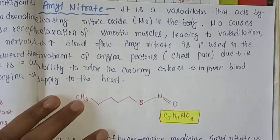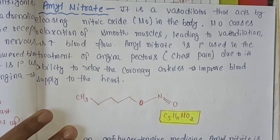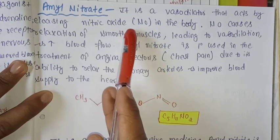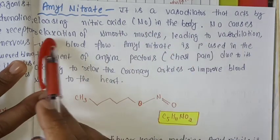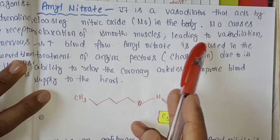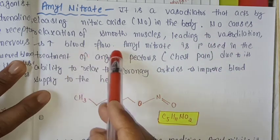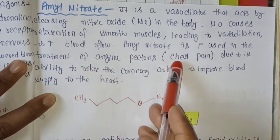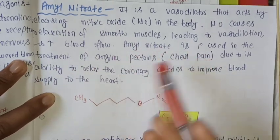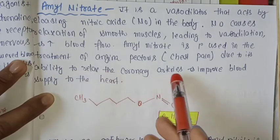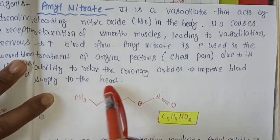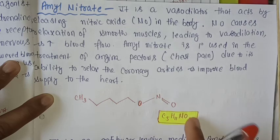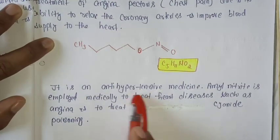Next is amyl nitrate. It is a vasodilator that acts by releasing nitric oxide (NO) in the body. NO causes relaxation of smooth muscle, leading to vasodilation and increased blood flow. Amyl nitrate is primarily used in the treatment of angina pectoris due to its ability to relax the coronary arteries and improve blood supply to the heart. Its molecular formula is C5H11NO2.